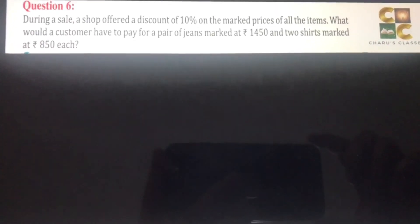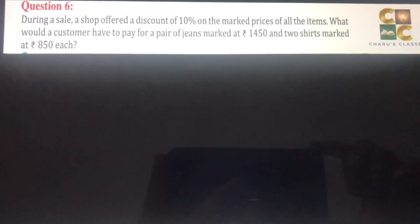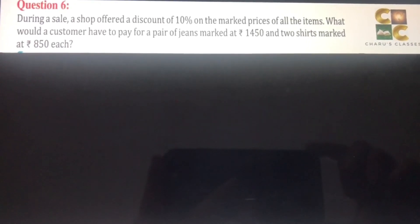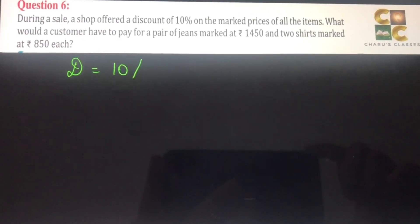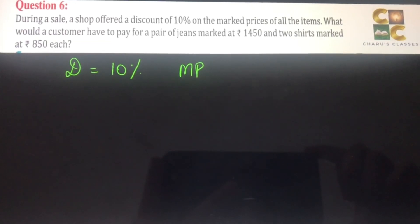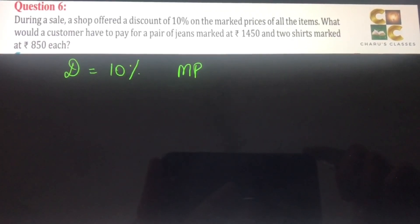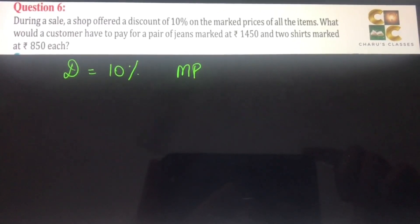Hello students, let's continue with question number six, exercise 8.2, comparing quantities, class 8. During a sale, a shop offered a discount of 10% on the marked price of all items. What would a customer have to pay for a pair of jeans marked at rupees 1450 and two shirts marked at rupees 850 each?